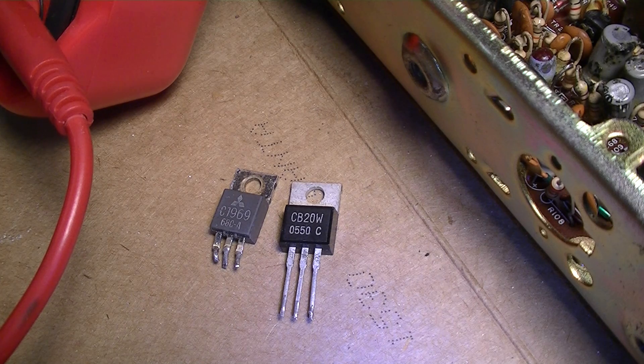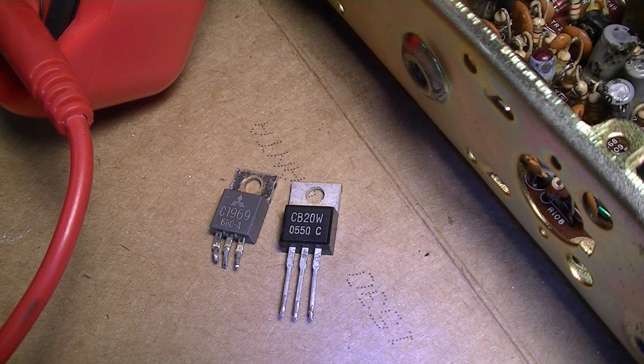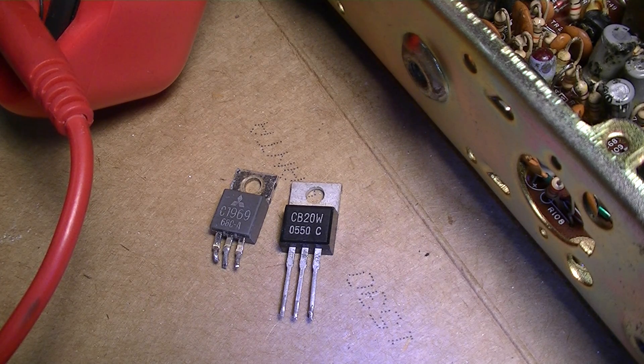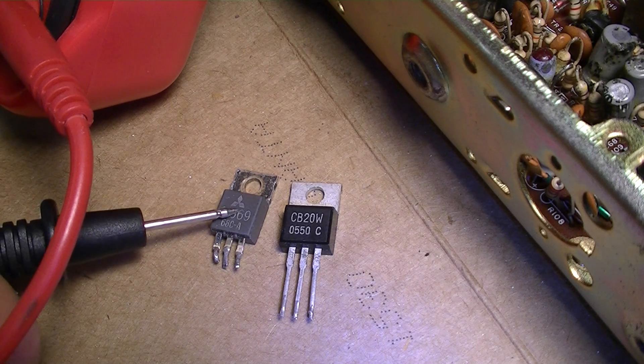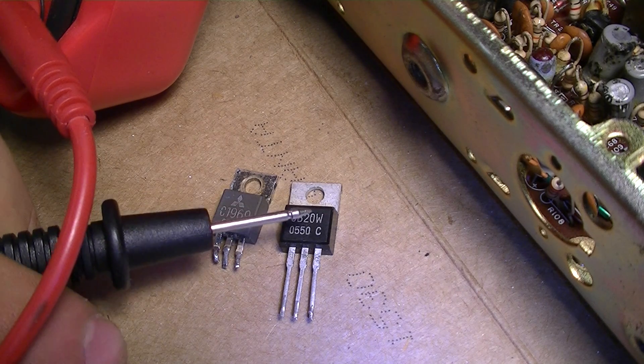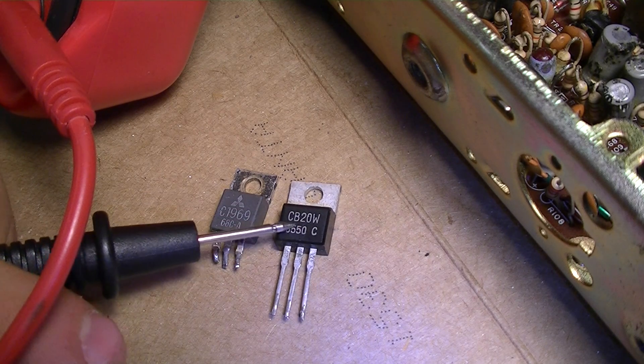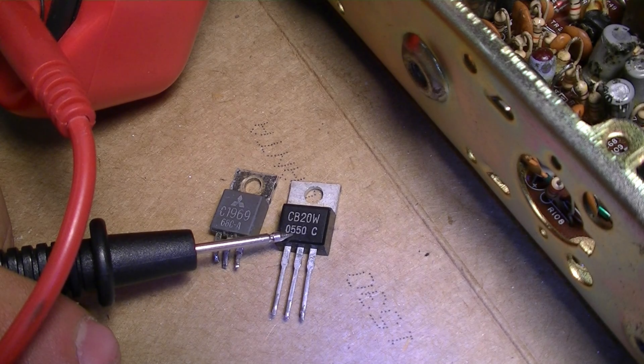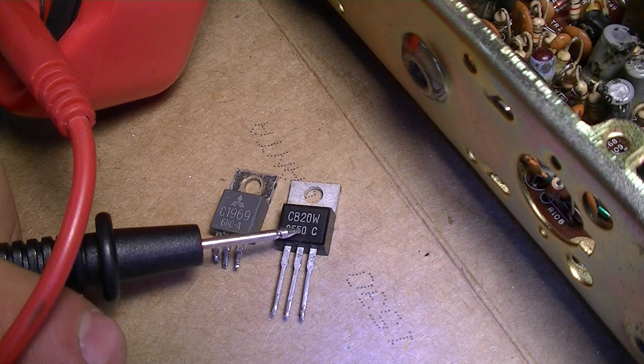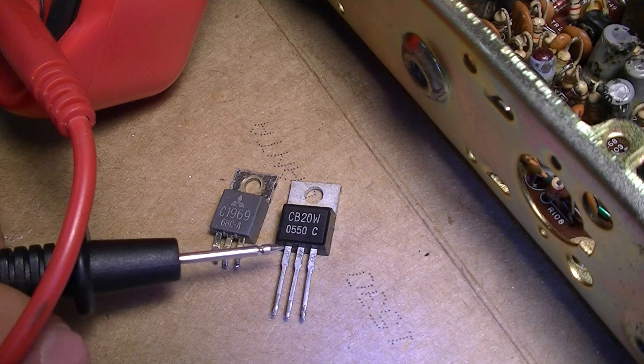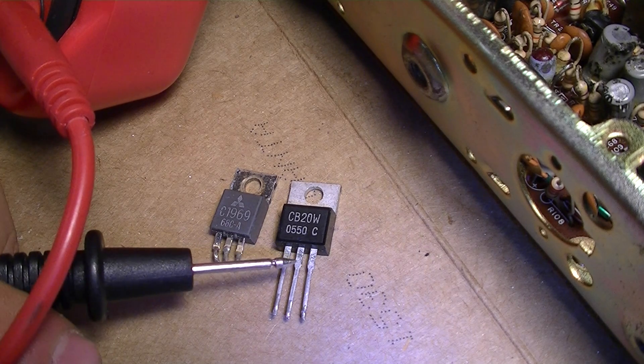This is the 2SC 1969 right here. This one is the CB20, this is the Elliflow. It's the company who made this transistor because Mitsubishi no longer makes them.